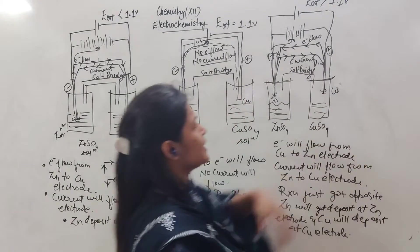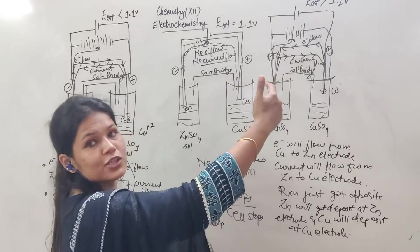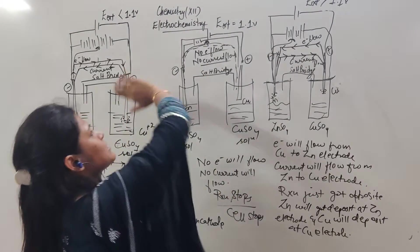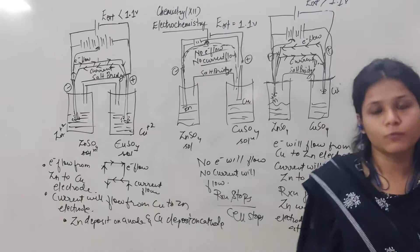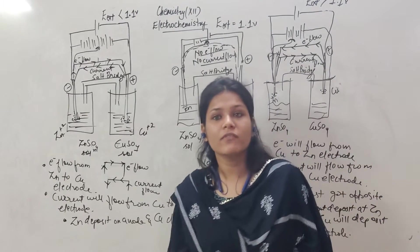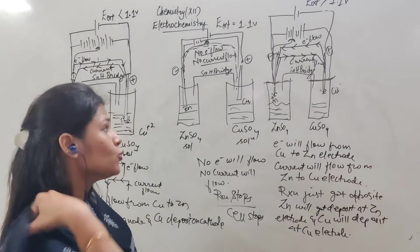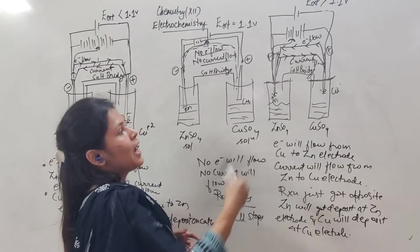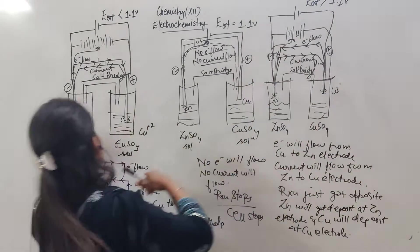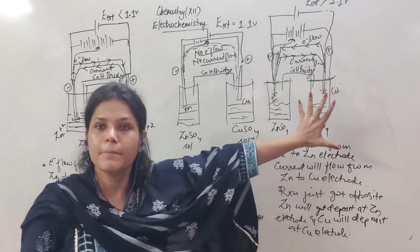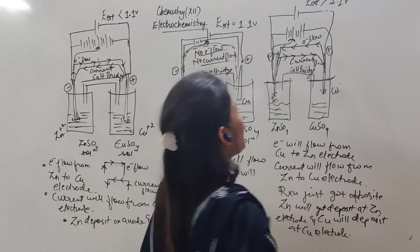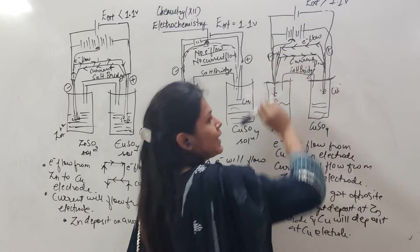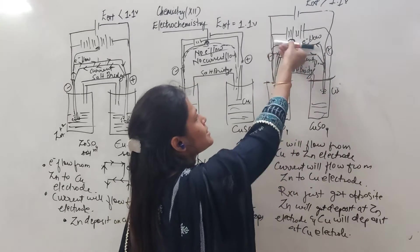Now let us talk about the third case, where external potential which is coming is not less, not equal, but greater than 1.1. Now what is going to happen? Just the change will come is that, the direction will be completely opposite. Now the electron flow will be opposite, and the current flow will be opposite. Just the reaction but opposite.